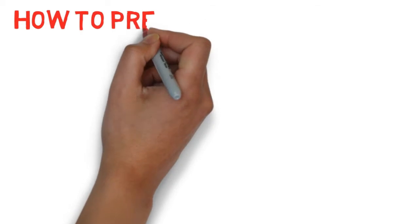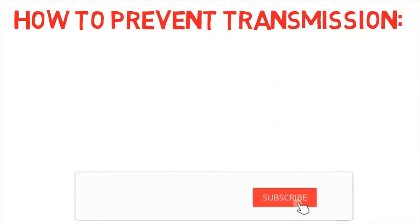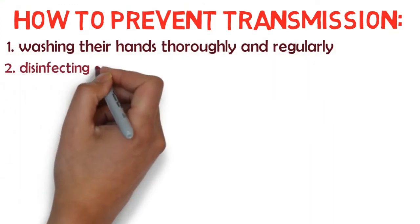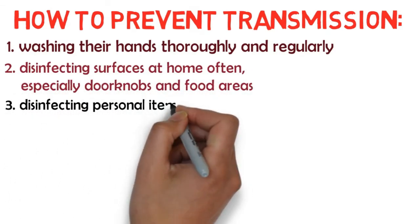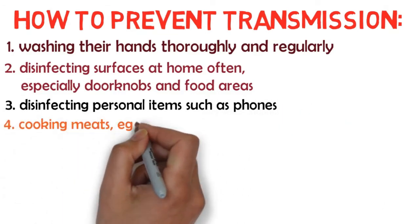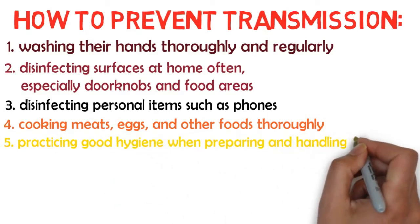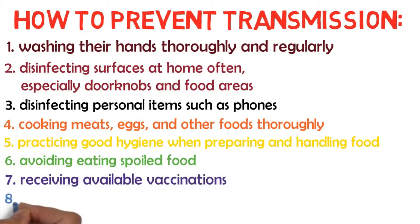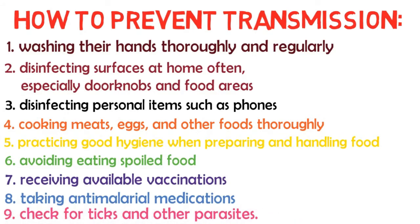People can reduce their risk of contacting or transmitting disease-causing pathogens through the following: washing their hands thoroughly and regularly, disinfecting surfaces at home especially doorknobs and food areas, disinfecting personal items such as phones, cooking meats, eggs, and other foods thoroughly, avoiding eating spoiled food, receiving available vaccines, taking anti-malaria medications when traveling to areas where there is a malaria risk, and checking for ticks and other parasites.